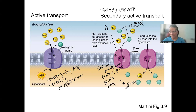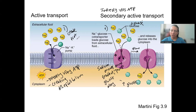That's all passive. But why does glucose come inside the cell? Because there's a concentration gradient set up by the ATP pump — this is basically step one: we create the sodium gradient. In step two, we use that sodium gradient. That is secondary active transport.